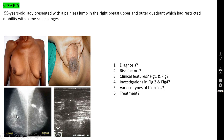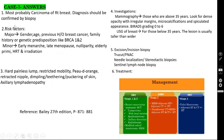Confirm with mammogram (this patient is 55, so mammogram is indicated) and true-cut biopsy. Risk factors: major — female gender, elderly age, previous history of breast cancer, family history of breast cancer, BRCA1 and BRCA2 positivity. Minor factors: early menarche, late menopause, nulliparous women, elderly primigravida, hormone replacement therapy, and irradiation during childhood.